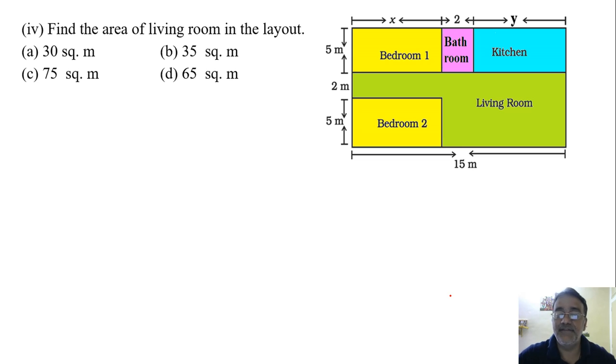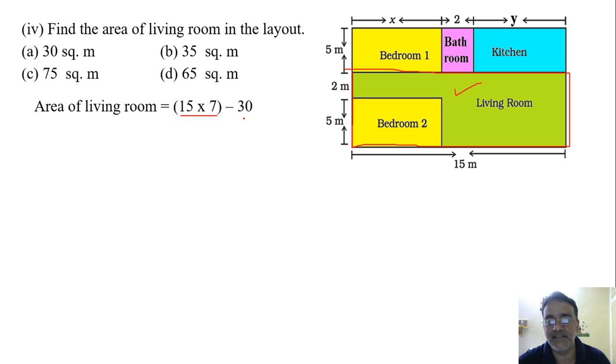So now we will move towards the fourth question. Find the area of living room. So this green shaded part is living room. So how will you find this area of living room? See this rectangle. So 7 into 15 minus area of the bedroom. Very good. 15 into 7, that is this rectangle area. And we will subtract bedroom from this rectangle.